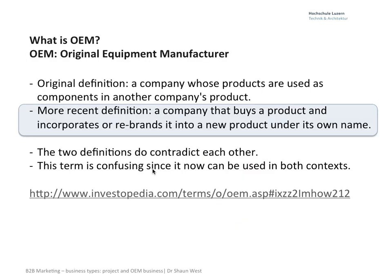What is an OEM? The more recent definition is a very clear one: a company that buys a product and incorporates or rebrands it into a product under its own name. I like the fact that if you're an OEM, your badge stays on your equipment. Think about a wind turbine — you provide the generator, and your name is and remains on that generator.